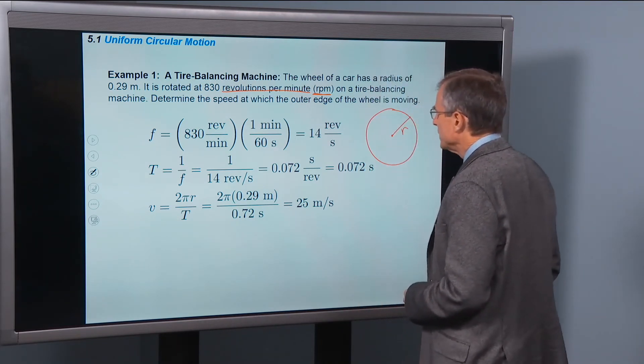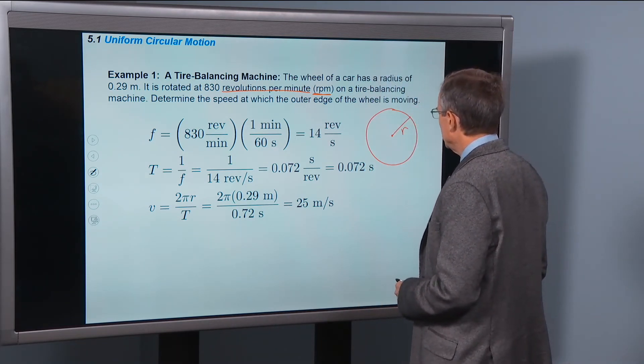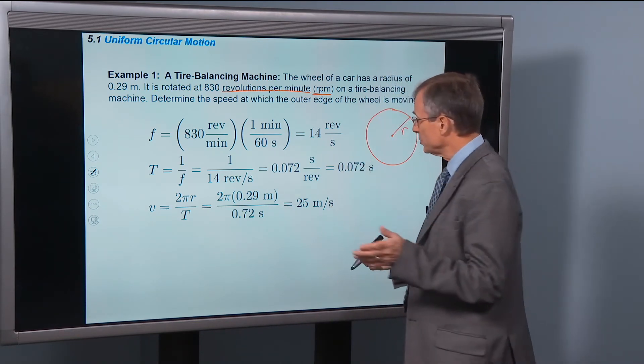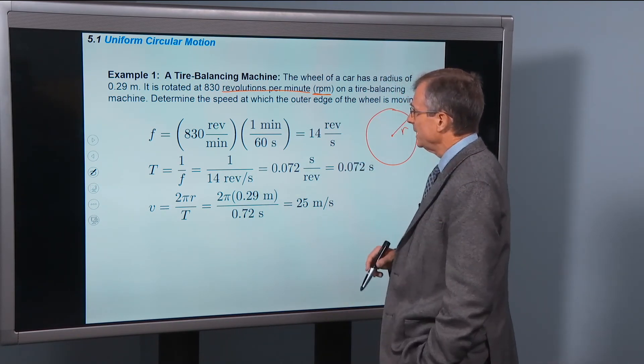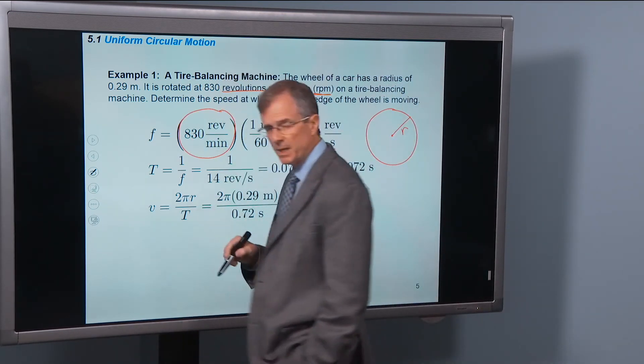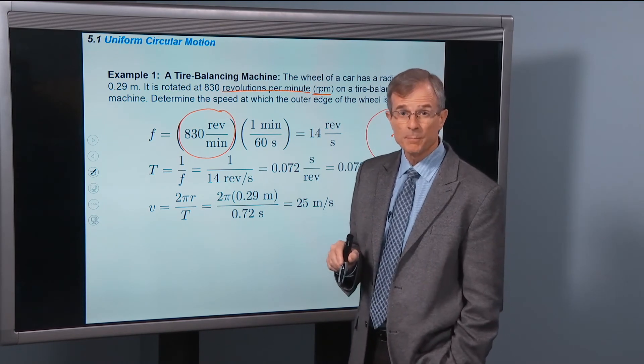We're supposed to find the speed at which the outer edge of the wheel is moving. Well this is just uniform circular motion. We've got the radius, we've got the frequency. Frequency is 830 RPMs, or revolutions per minute.